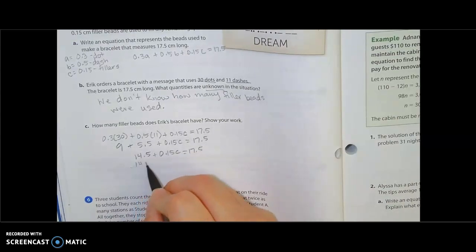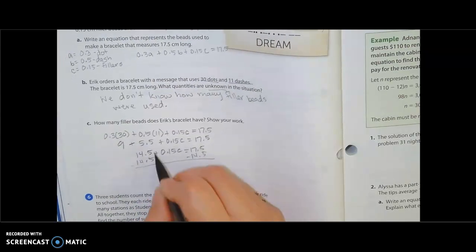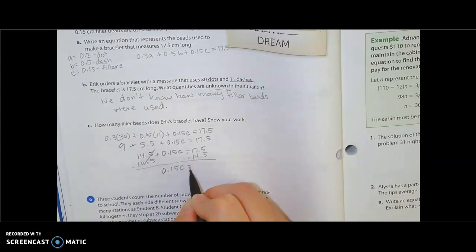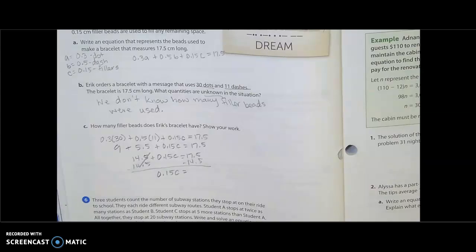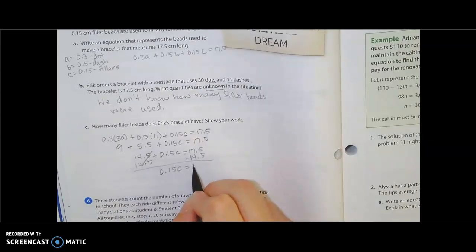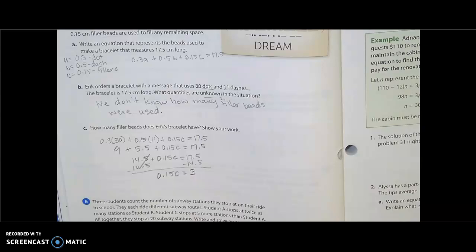I'm going to subtract the 14.5 over so we know how much is left just for my filler beads and how much length they take up. 0.15C is going to equal 17.5 minus 14.5, means they're going to take up 3 centimeters.